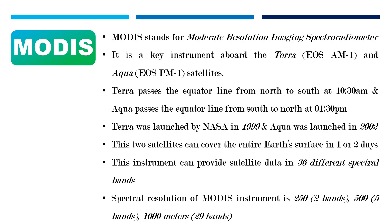It is a key instrument aboard the Terra (EOS AM1) and Aqua (EOS PM1) satellites. Terra passes the equator from north to south at 10:30 AM, and Aqua passes from south to north at 1:30 PM. Terra was launched by NASA in 1999 and Aqua was launched in 2002.